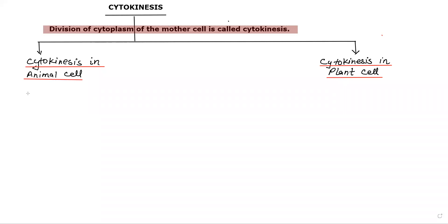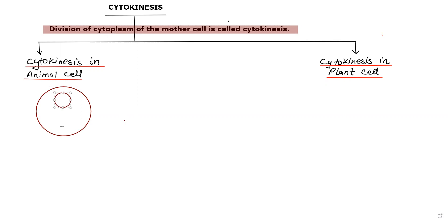In the animal cell, cytokinesis occurs by constriction. Let's see the diagram. Here is the cell, and as nuclear division takes place, two daughter nuclei form. So this is the daughter nuclei. How does this cytoplasmic division take place? In the animal cell, cytokinesis occurs by constriction.